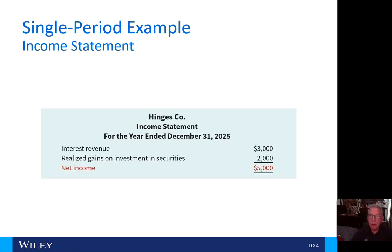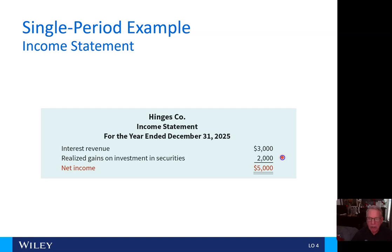So how does the income statement look? Here we have interest revenue of $3,000 and realized gains on investment securities of $2,000, which results in a net income of $5,000.